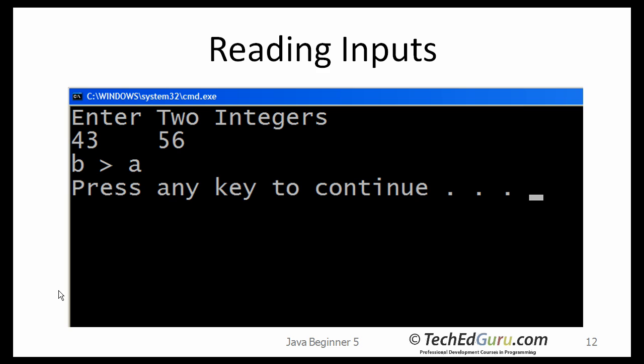If you run this program, it's going to ask you to enter two integers. You enter 43 and 56 — 43 is A and 56 is B. And of course, the situation here is that B is greater than A.